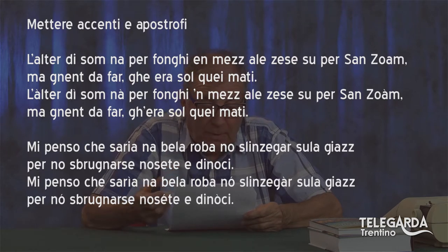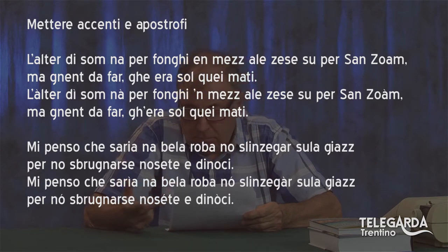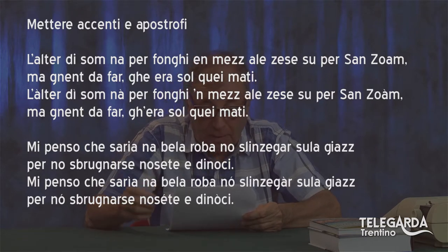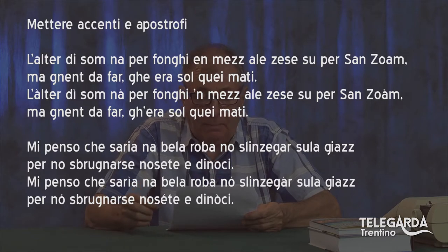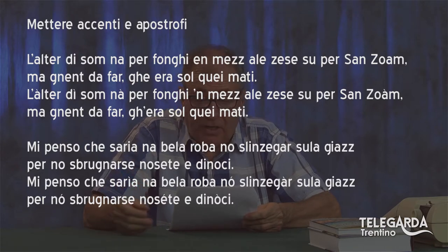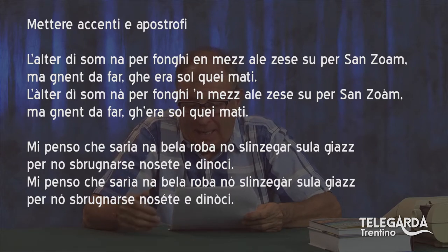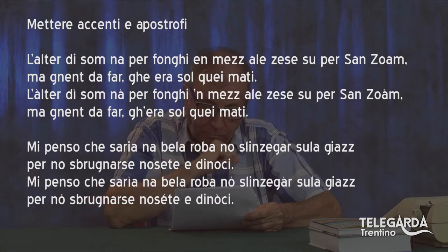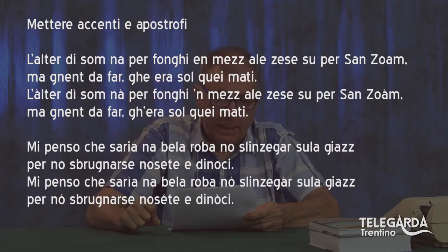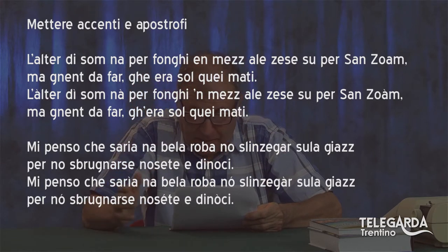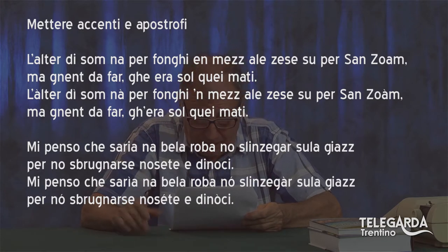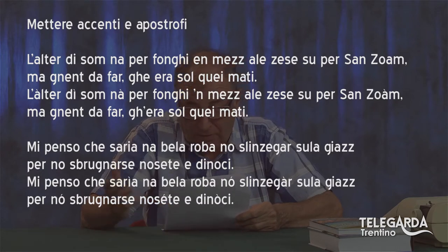Adesso la versione corretta: l'àltèr — non l'alter, meglio mettere l'accento sulla A. Dì va accentato. Sómnà — participio passato — è meglio accentarlo. Per fonghi 'n mezzo: scontro fra la I e la E, cade la E, ci va l'apostrofo. Àlle cèse sono le siepi. Su per Sanzòam — non Sanzoam — un bel accento sulla A. G'éra apostrofo. Traduzione: 'L'altro giorno sono andato per funghi in mezzo alle siepi su per San Giovanni, ma niente da fare, c'erano solo quelli matti, immangiabili.'